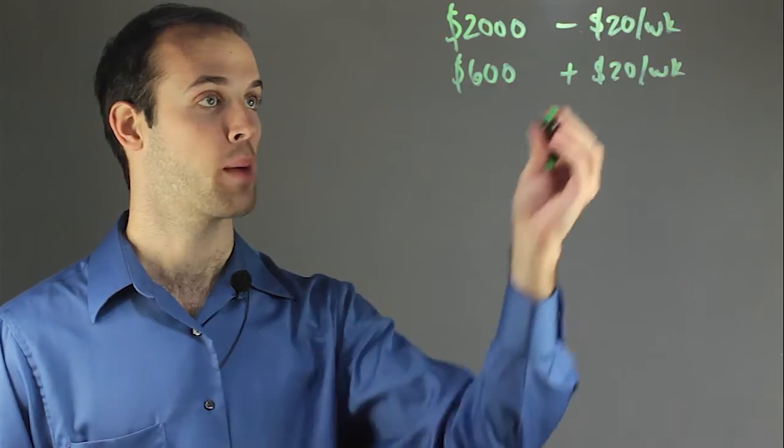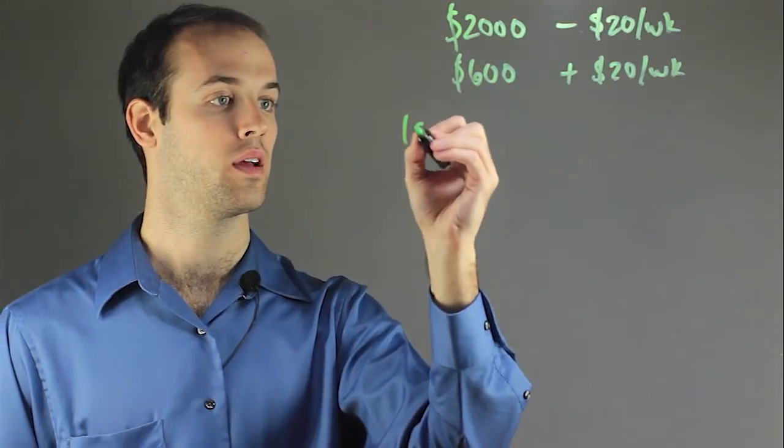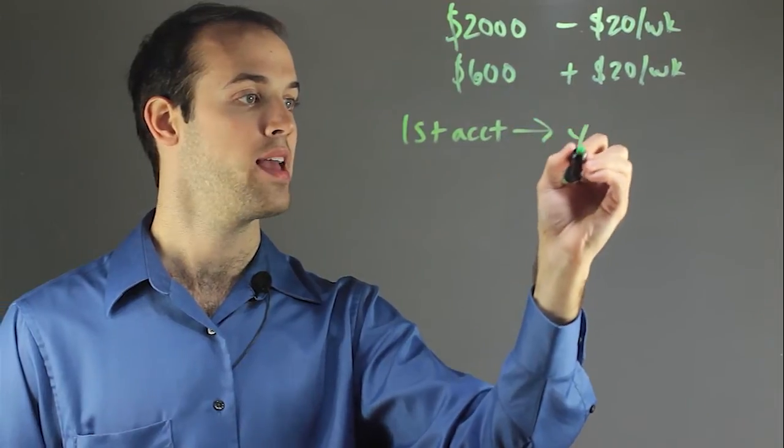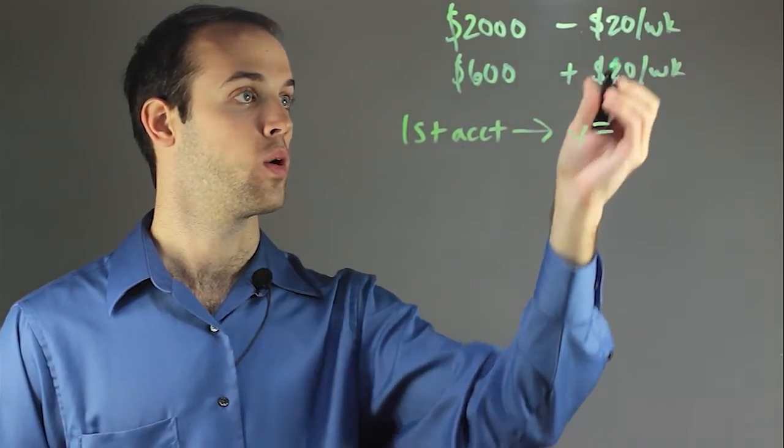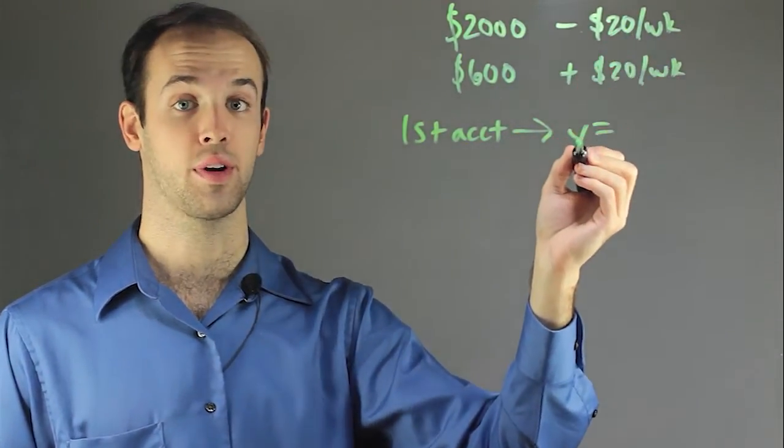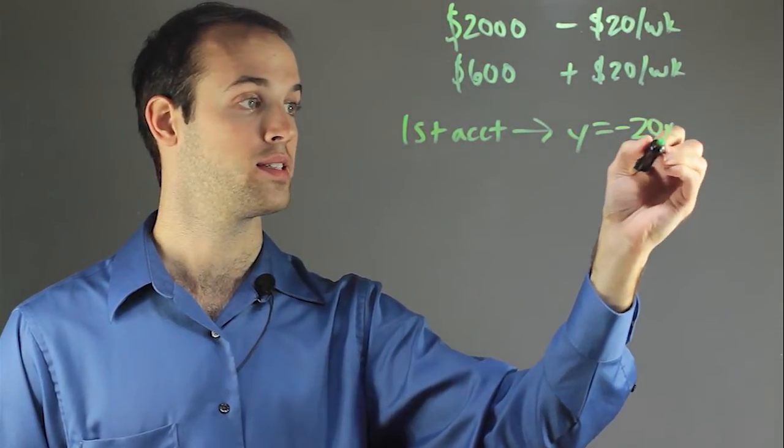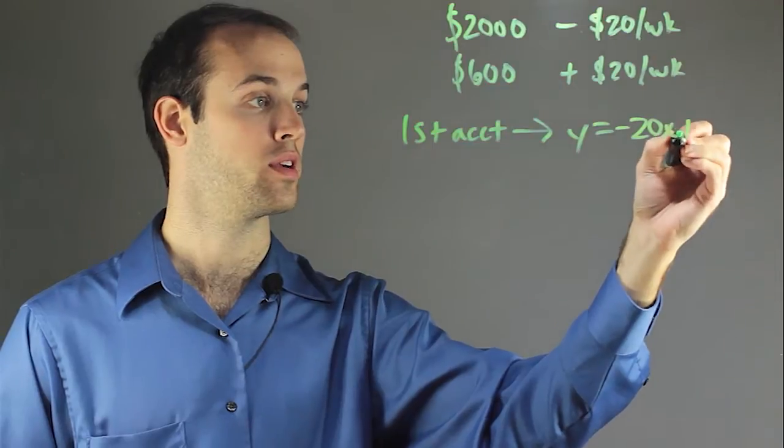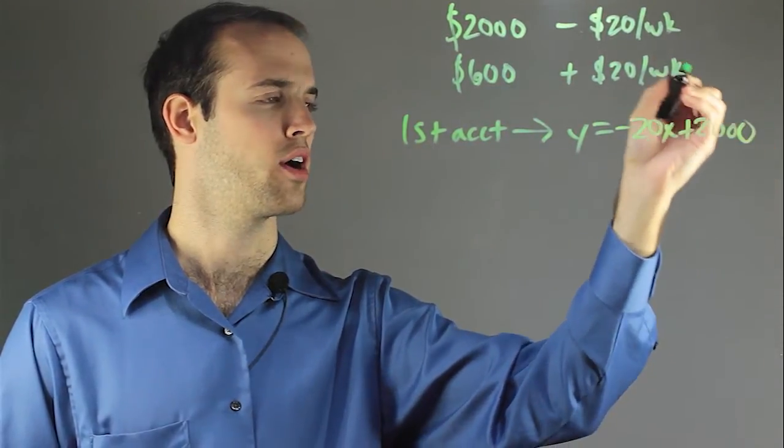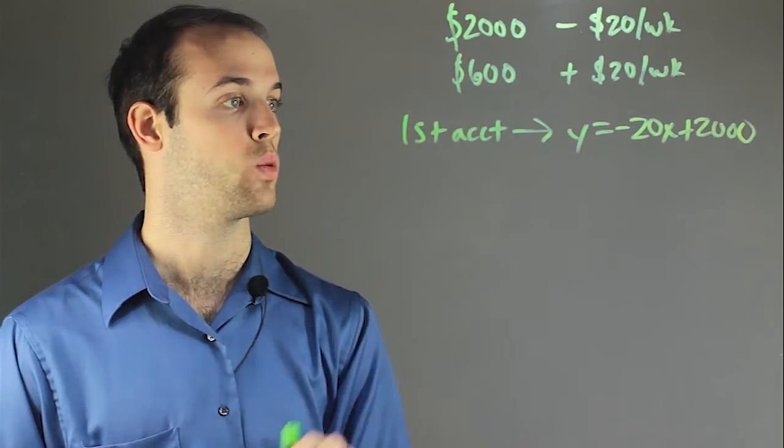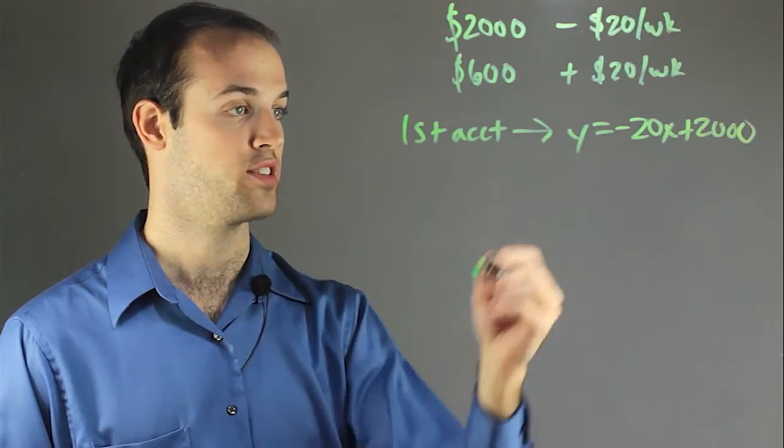So I'm going to represent the first bank account with this equation. y equals, we know that the slope is going to decrease 20 times the number of weeks and it starts out with $2,000. So we know that the first account is represented by the equation y equals negative 20x plus 2,000.